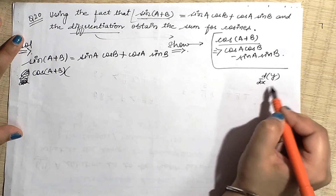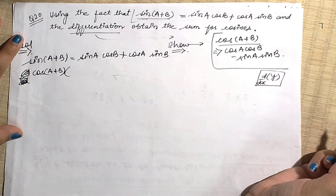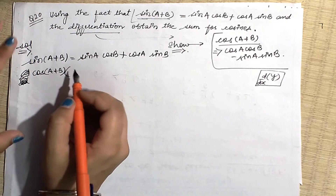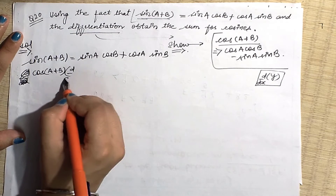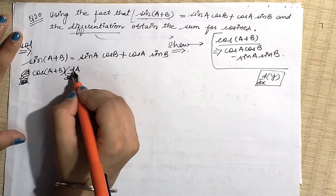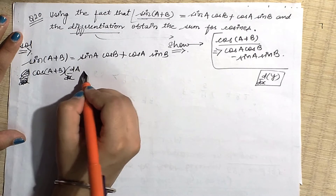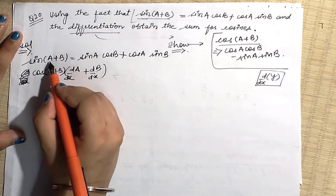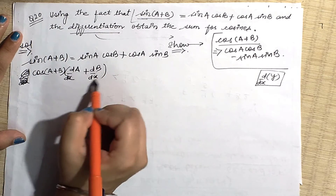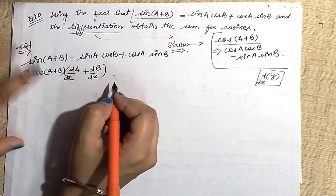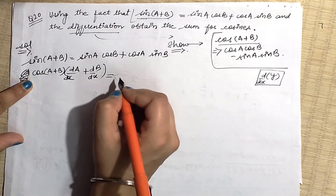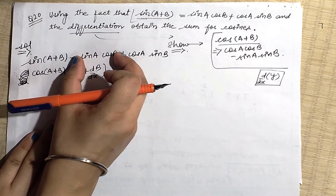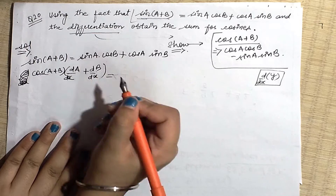Think of a and b like y — if you differentiate with respect to x, the chain rule gives da/dx + db/dx. So the left hand side becomes cos(a+b) times (da/dx + db/dx). Now on the right hand side, looking at the first term sinA cosB — this will be solved using the product rule.